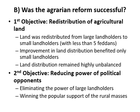The question is: was the agrarian reform successful or not? To answer that, we must discuss the objectives of the policy and its impacts. The reform policy had two main objectives. The first was the redistribution of agricultural land from large landholders to small landowners.